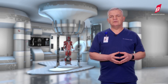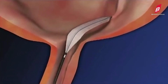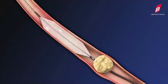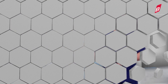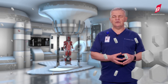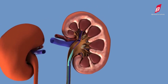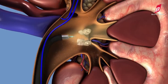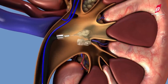Уретероскопічна літотрипсія: при знаходженні каменя в сечоводі ендоскопічно через природні шляхи ендоскоп доходить до каменя і камінь руйнується ультразвуком або лазером. Ретроградна інтраниркова хірургія: за допомогою гнучких ендоскопів ми можемо зайти в середину чашково-мискової системи нирки і фактично в будь-яку чашечку зруйнувати камінь і видалити його маленькими осколками.